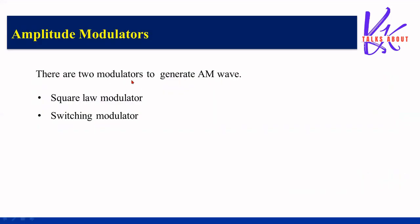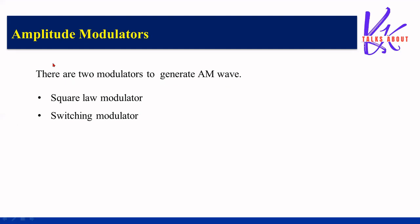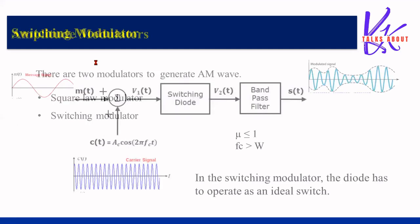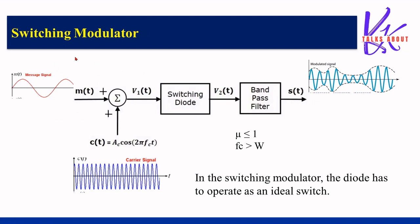There are mainly two types of modulators to generate an AM wave: one is the square law modulator and the other is the switching modulator. In this lecture we are going to cover what is a switching modulator.